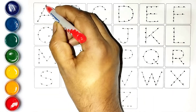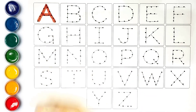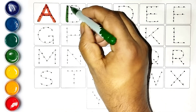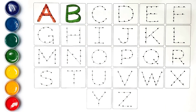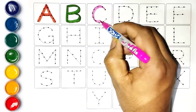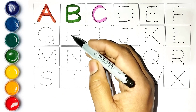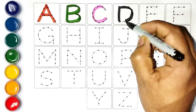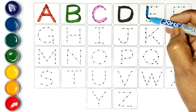Red color: A, A for apple, A for apple. Green color: B, B for ball, B for ball. Pink color: C, C for cat, C for cat. Black color: D, D for dog, D for dog.